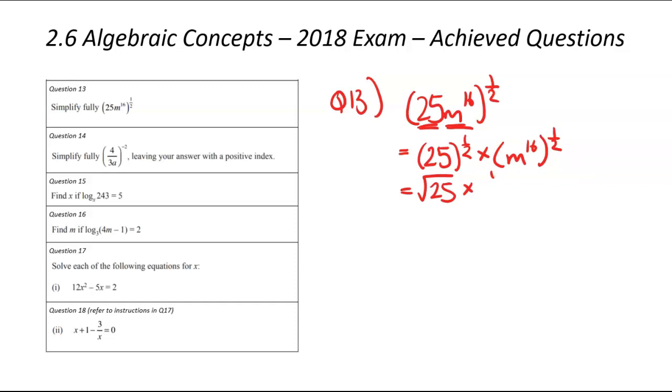all to the power of one half. And we're dealing with a bracket rule. When you're dealing with brackets, you multiply the powers. It's going to be m to the power of 16 times one half. I'm now going to do my final simplifying. The square root of 25 is 5, and 16 times one half is 8. So that means our final simplified answer would be 5 times m to the power of 8.